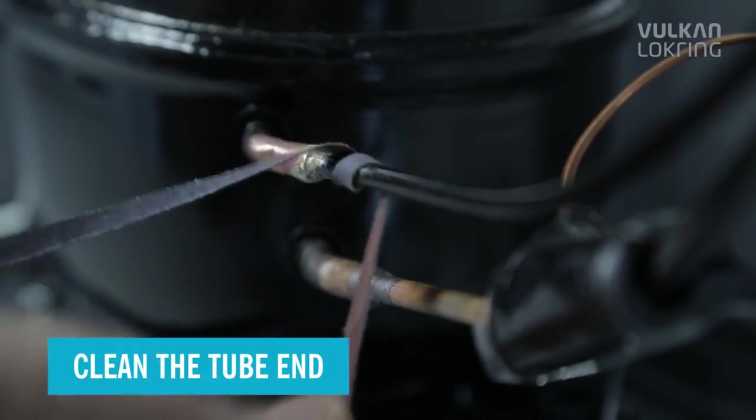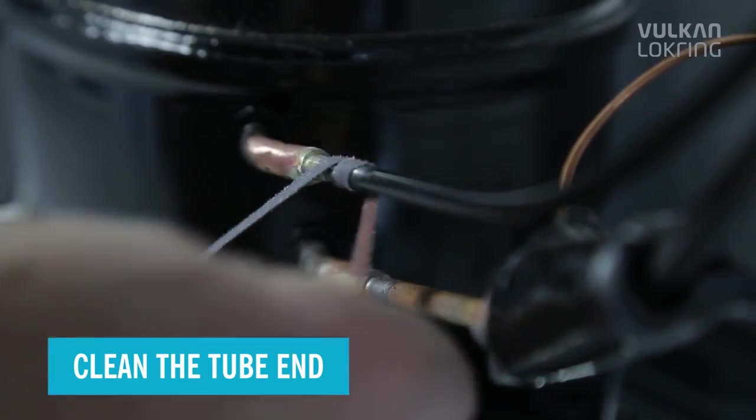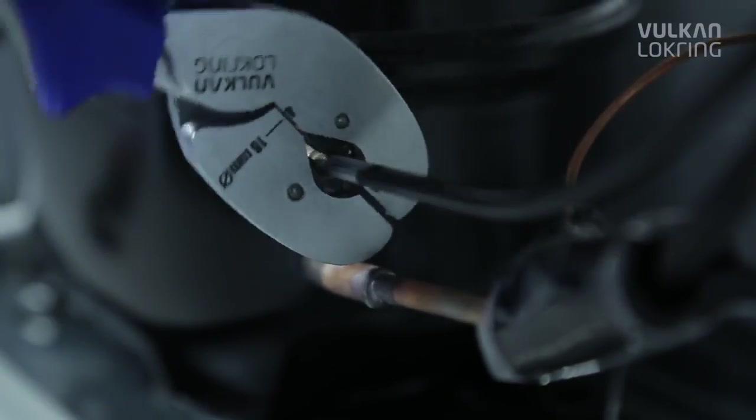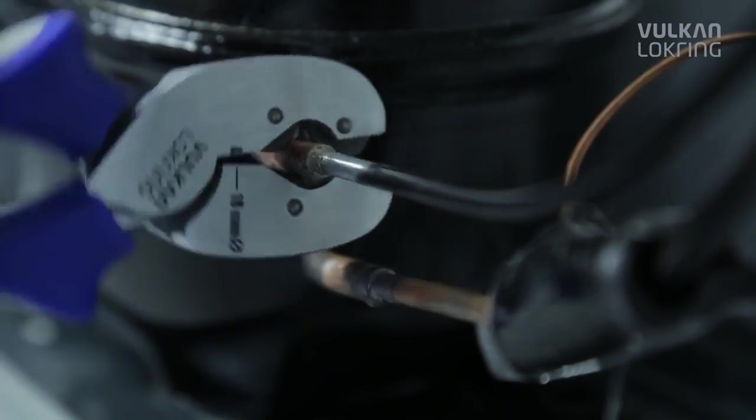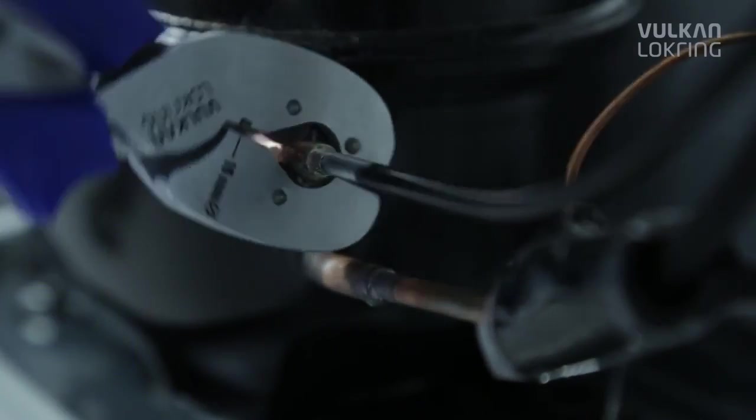First, thoroughly clean the tube ends. Next, cut out the leaking section or component to be replaced. This is most easily done using our special LR-SZ tube cutting pliers.